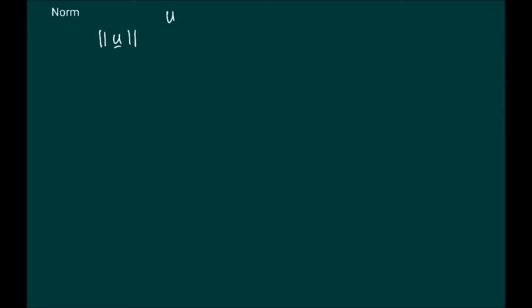The norm of a vector u, where u belongs to Rn, is indicated by having these two parallel lines around the vector. This indicates that we're computing the norm of the vector. The specific Euclidean norm — because we are dealing with Euclidean vector spaces — of u is simply the square root of u1 squared plus u2 squared plus up to un squared. It is simply taking the sum of the squares of the components of any vector.